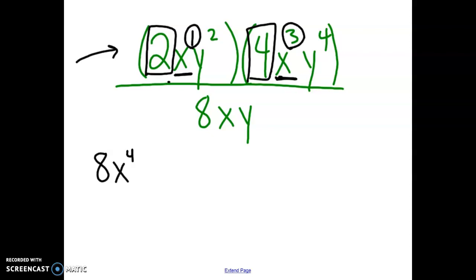Now we're looking at the y's. So we have y to the second and y to the fourth. 2 plus 4 is 6, so y to the sixth power. And then the denominator right here just stays the same, 8xy.